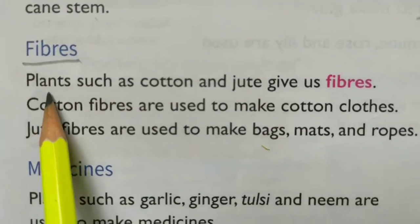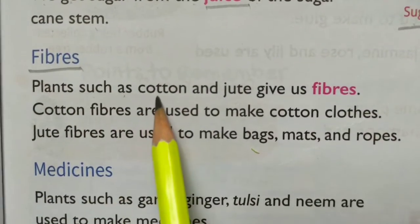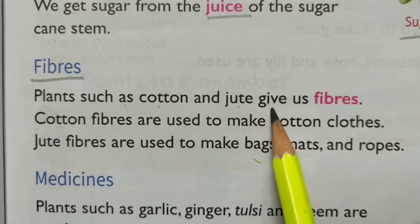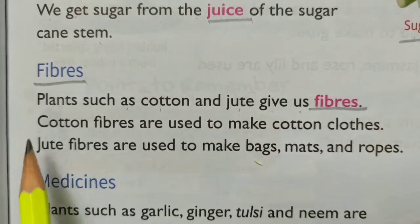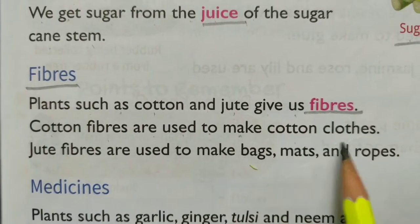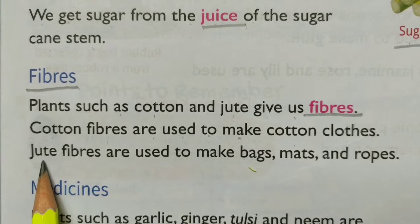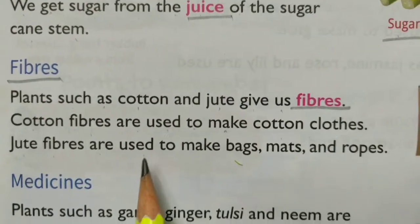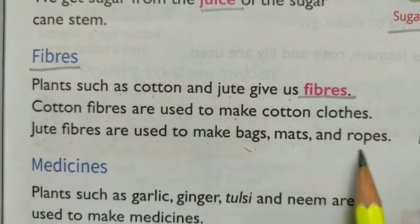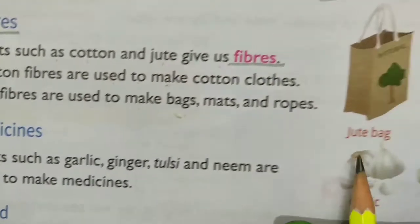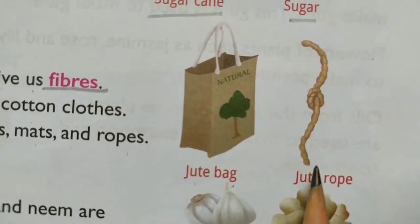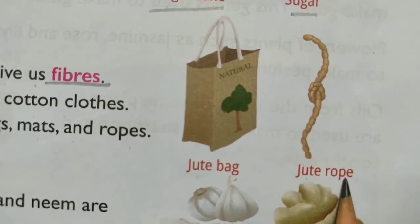Fibers. Plants such as cotton and jute give us fibers. Cotton fibers are used to make cotton cloth. Jute fibers are used to make bags, mats and ropes. This is a jute bag and this is jute rope.